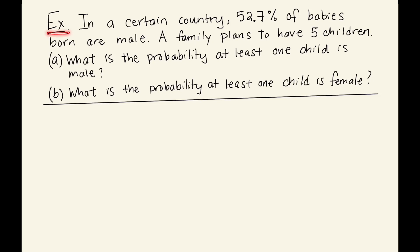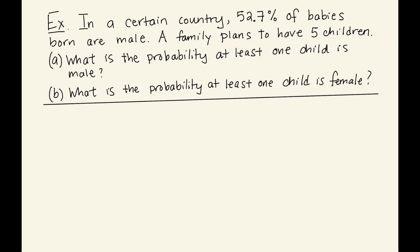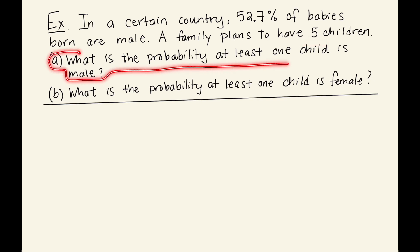In this example, we are going to learn how to tackle 'at least one' type problems. In a certain country, 52.7% of babies are born male. A family plans to have five children. The first question is: what is the probability that at least one of the five children is male?